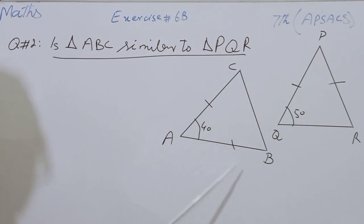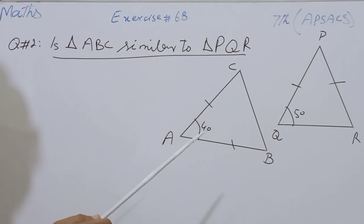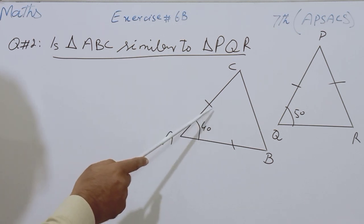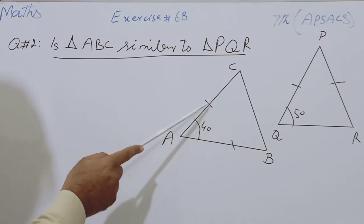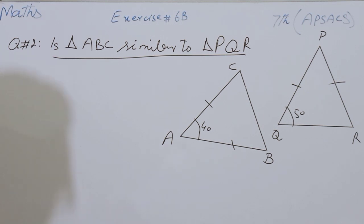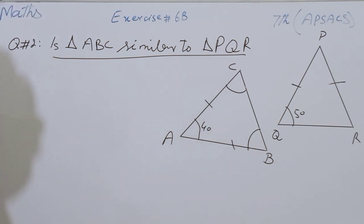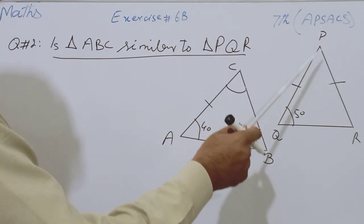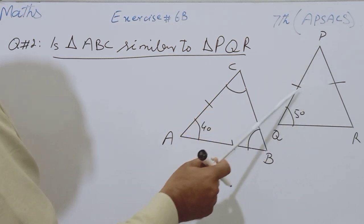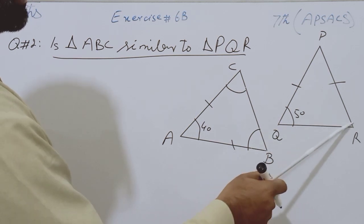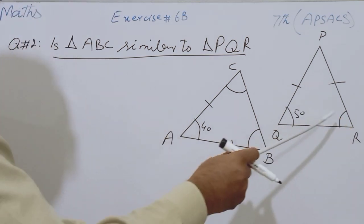Both Triangle ABC and Triangle PQR are Isosceles Triangles. You should keep in mind that Isosceles Triangles have congruent base angles, because if two sides of a triangle are equal, their opposite angles will be congruent. So Angle B and Angle C will be equal, and in Triangle PQR, the sides PR and PQ are congruent. The base angles are Angle Q and Angle R, and the value of Angle R will become 50 degrees because both angles are congruent.